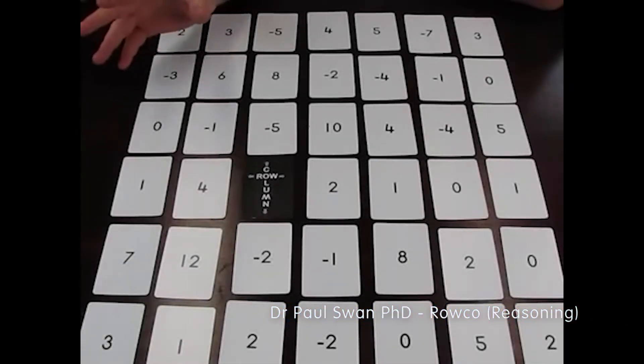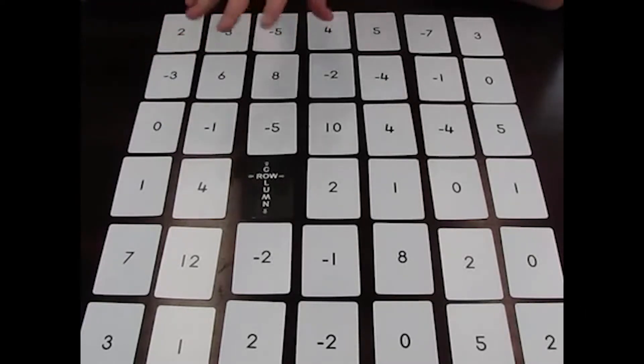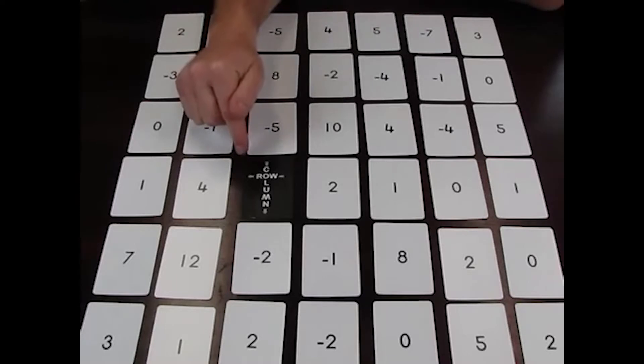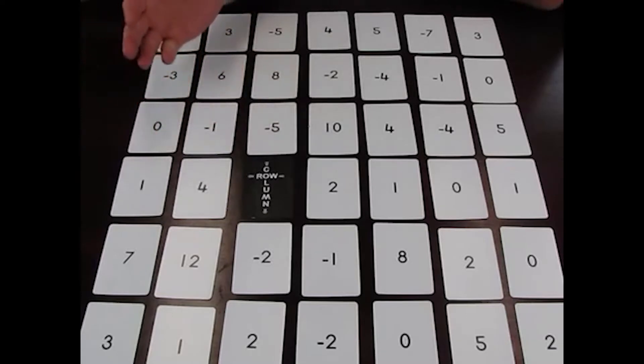In the card game Roco, you have 49 cards in all, and they're dealt in a 7x7 array. Every time you deal the cards out, obviously the order will be different because you will have shuffled. There's one card which is called the Market Card, and that has the words Row and Column written on it. And basically the play is fairly simple.